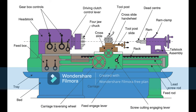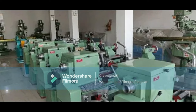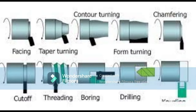Engine lathes are used in a wide variety of manufacturing operations such as turning, which involves rotating the workpiece and using a cutting tool to remove material; facing, which involves cutting the end of a workpiece to make it flat and smooth; drilling, which involves using a drilling tool to create a hole in the workpiece; tapping, which involves creating internal threads in a drilled hole; and knurling, which involves using a knurling tool to create a pattern of small ridges on the surface of the workpiece.